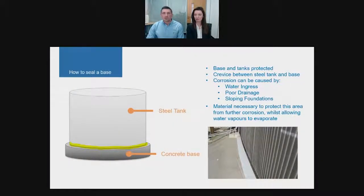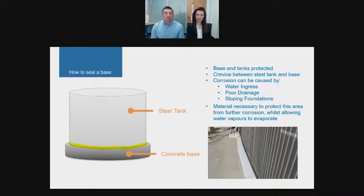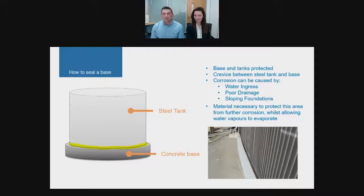Tank bases are one of the key areas where a microporous membrane can be utilized, and we have a long history of applications here. Storage tanks are generally placed onto a concrete pedestal with a bed of sand. The tank can move, causing conventional sealant to fail between the tank and the base. Over time this results in corrosion at the chime angle or on the track underneath the base — highlighted in yellow — due to water ingress, poor drainage, or sloping foundations, and could ultimately cause loss of containment. Our solution is to apply a microporous membrane to both the concrete base and the steel tank, with bridging tape to allow a smooth transition onto both substrates. The solution can also be inspected with NDT equipment.